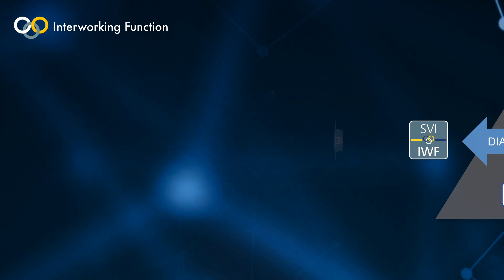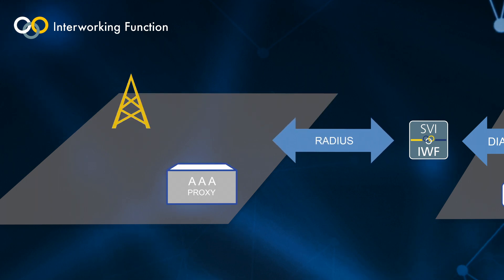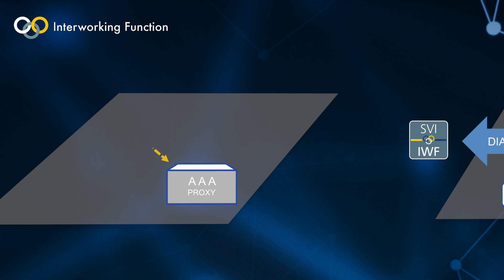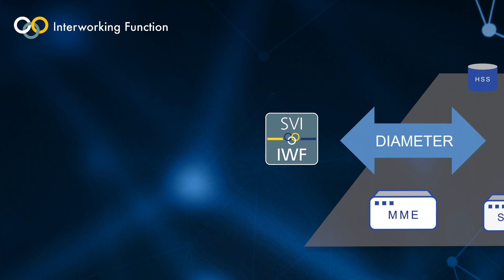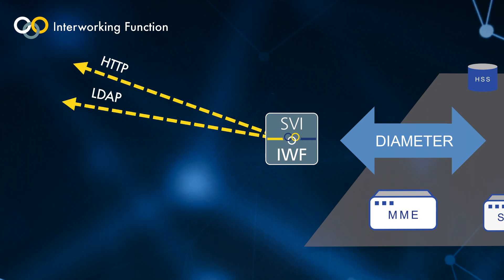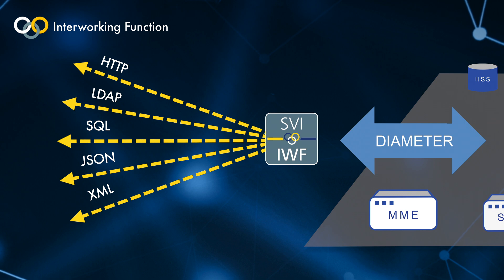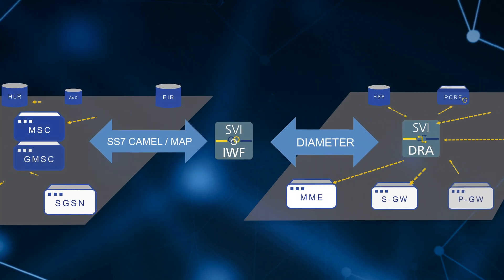They are also being deployed to enable Wi-Fi offload, where the IWF provides diameter to RADIUS interop. The IWF also allows diameter to interop over a wide range of industry standards and protocols, allowing interconnect with not only core network components, but also OSS and BSS components, such as online charging systems, application servers, and sophisticated routing engines.